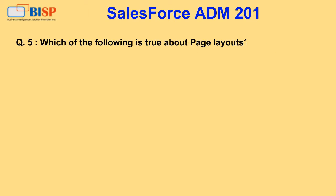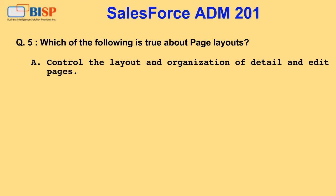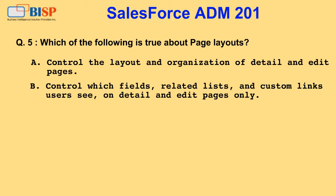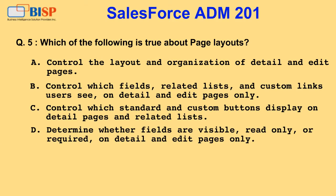Question 5. Which of the following is true about page layouts? A. Control the layout and organization of detail and edit pages. B. Control which fields, related lists, and custom links users see on detail and edit pages only. C. Control which standard and custom buttons display on detail pages and related lists. D. Determine whether fields are visible, read-only, or required on detail and edit pages only. E. All of the above.